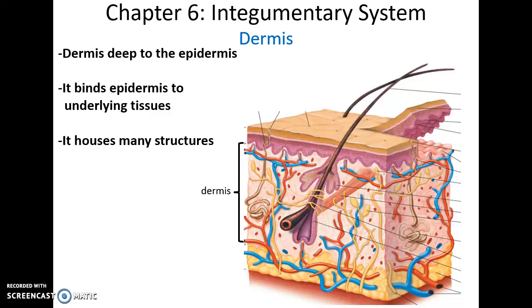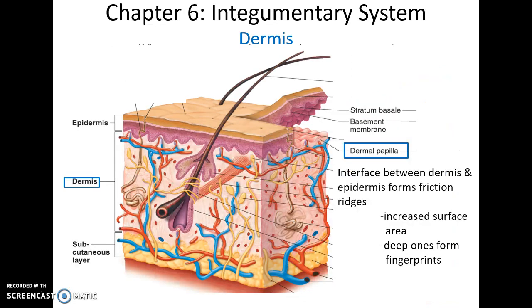The dermis is deep to the epidermis and it binds the epidermis to the underlying subcutaneous layer. Within the dermis are many different structures. At the interface between the epidermis and dermis, the dermis has little hills that push up into the epidermis called dermal papillae. These help increase the contact between the epidermis and dermis and hold them tightly together so that the epidermis does not separate.